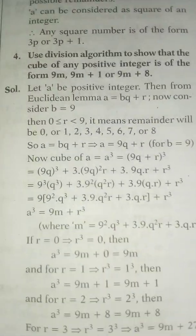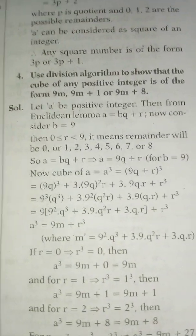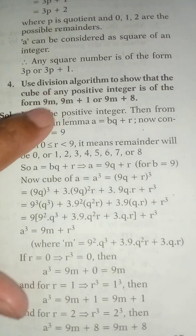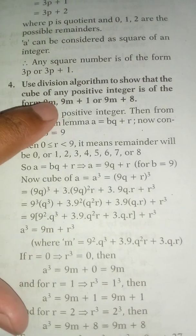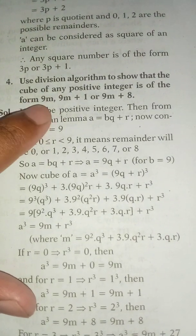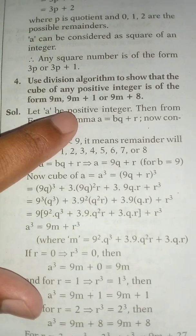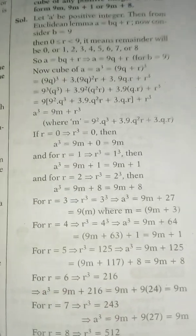Our next question, the fourth question: Use division algorithm to show that the cube of any positive integer is of the form 9n+1 or 9n+8. It's a very long answer. It is a very long answer, but I'm showing you.